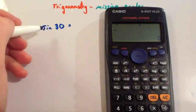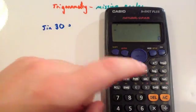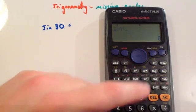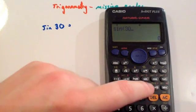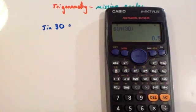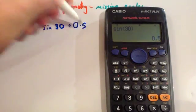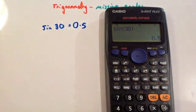I want to look at the sine, cosine and tan functions a little bit more. So, the sine of 30 — if you want to work out the sine of 30, you'll remember you press sine, 30, close brackets, and you get 0.5.